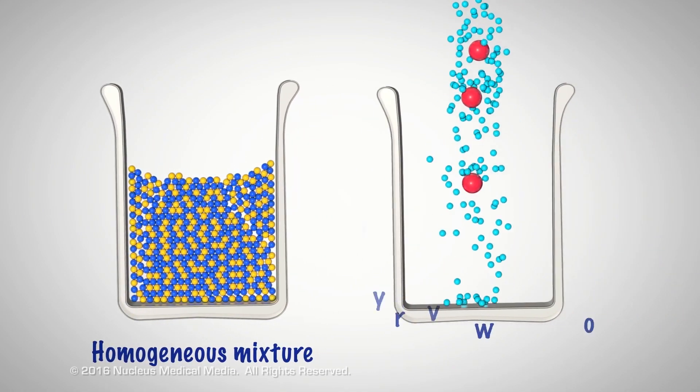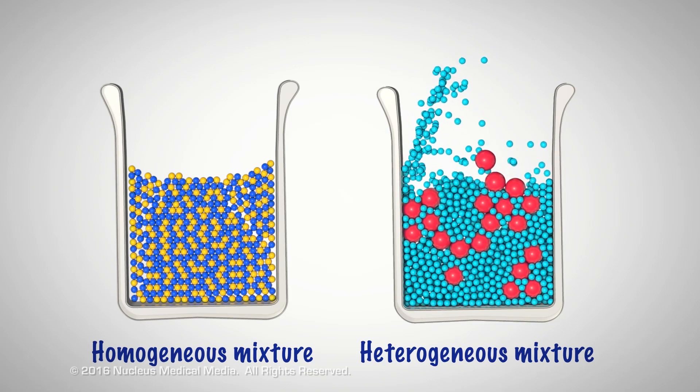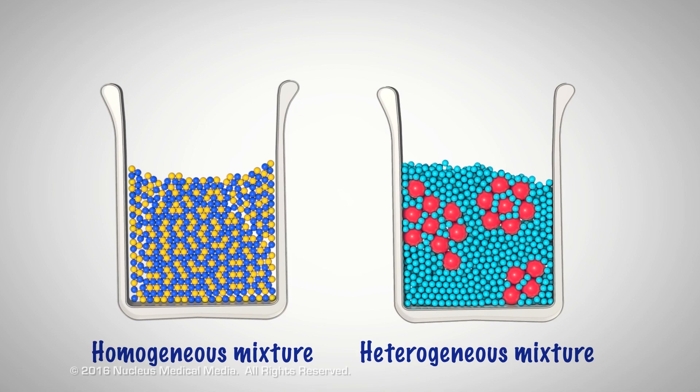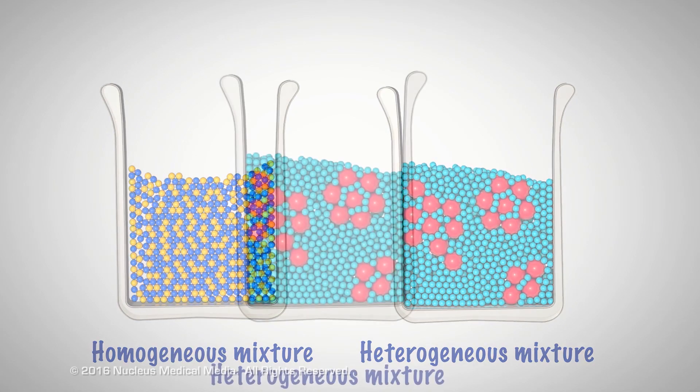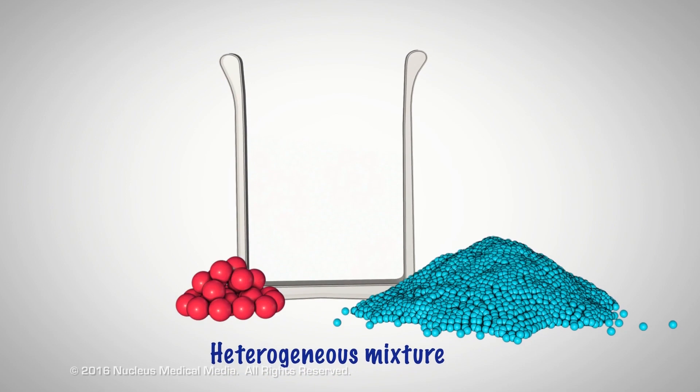In contrast, a heterogeneous mixture consists of significantly larger particles that are not uniformly distributed and are more easily seen. The components of a heterogeneous mixture can usually be separated easily.